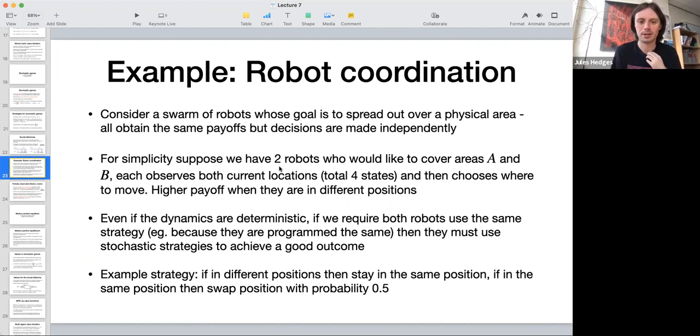Here's a version that gives you the idea of this example, but is simplified to an extreme. Suppose we have two robots who would like to cover two areas, so they would like to get into a state where there is one in each of the two areas. We're going to have a Markov chain with four states because two robots can be in two different states in four ways. In each round, the robots observe both of their locations and then each of them can individually choose where to move, either to stay put or to go to the other area.